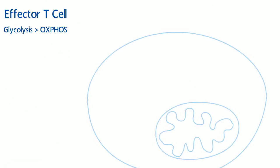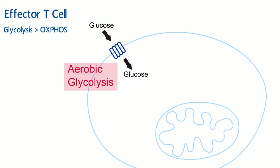Effector T-cells upregulate and heavily rely on aerobic glycolysis, which is the transformation of glucose to lactate in the presence of oxygen. During the process, glucose is the main nutrient for generation of biosynthetic precursors.